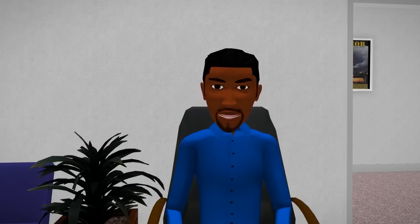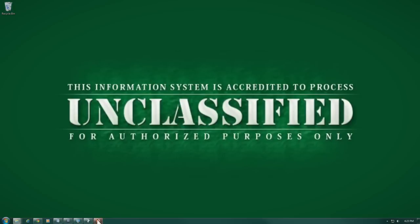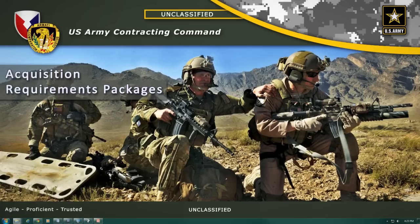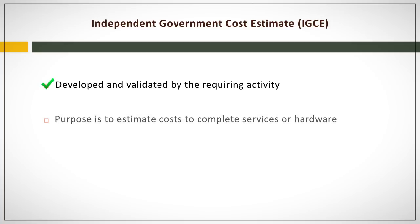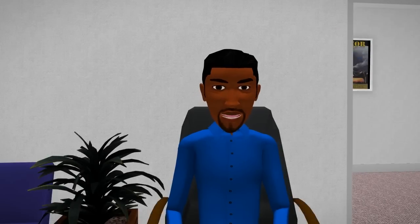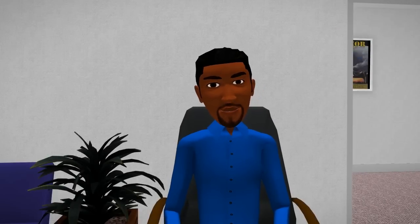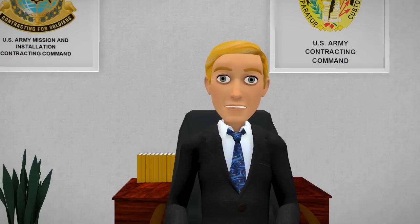If you can provide some references for me that will be helpful as well. Of course, I'll go over the IGCE with you. To begin, let's talk about exactly what the IGCE is. The IGCE is the government's independent government cost estimate developed by the requiring activity, and its purpose is to estimate what it would cost to complete the tasks required or to purchase an item. An IGCE is required for any action over the simplified acquisition threshold. Remind me again, what is the simplified acquisition threshold?